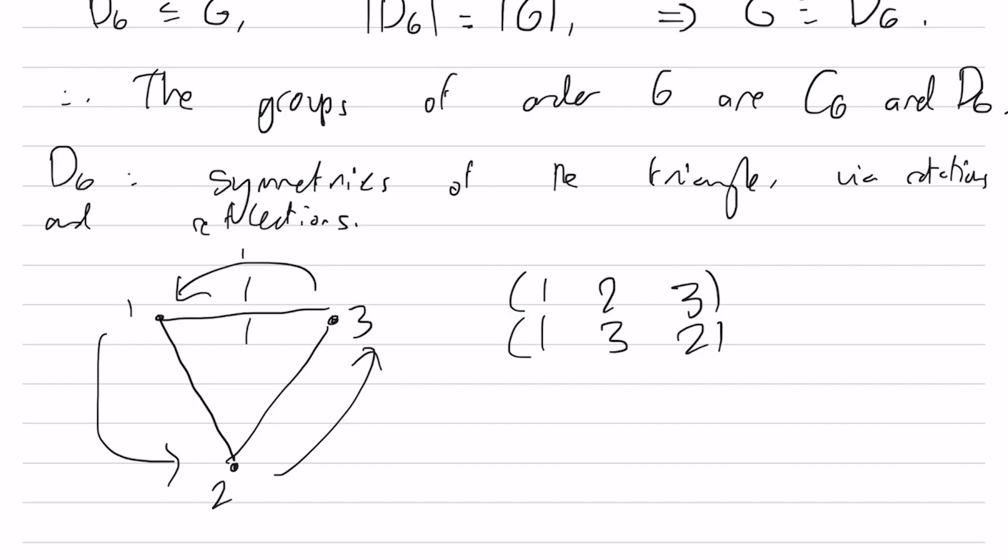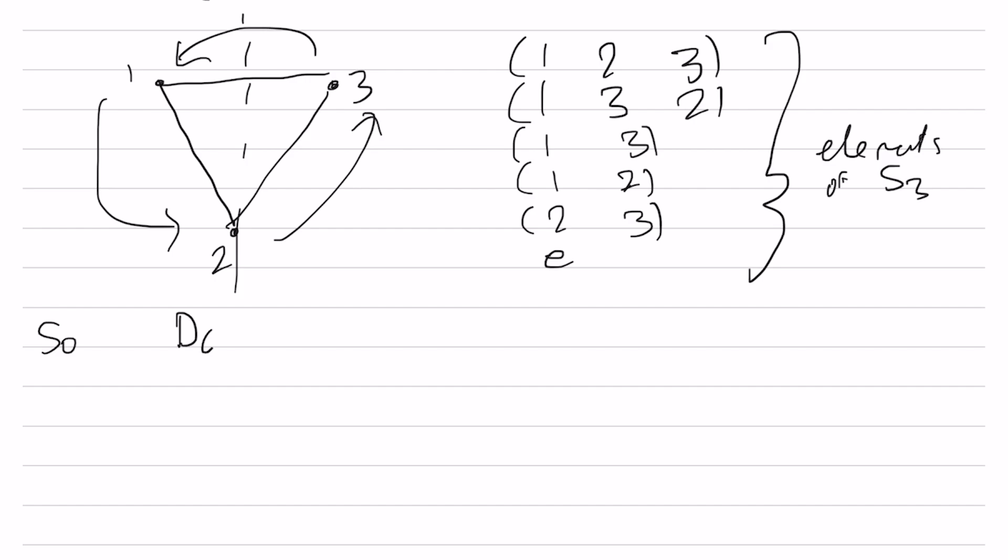And any reflection is going to fix one vertex and flip the other 2, so we get these transpositions. And then also we have the just do nothing. And well, those are just the elements of S3. So D6 is isomorphic to S3.